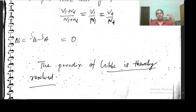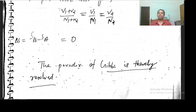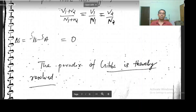So the net change in entropy Sb minus Sa equals 0. The Gibbs paradox is hereby resolved. Just by dividing sigma or gamma by n factorial, we get an expression for entropy which is extensive, and that clearly solves the Gibbs paradox.